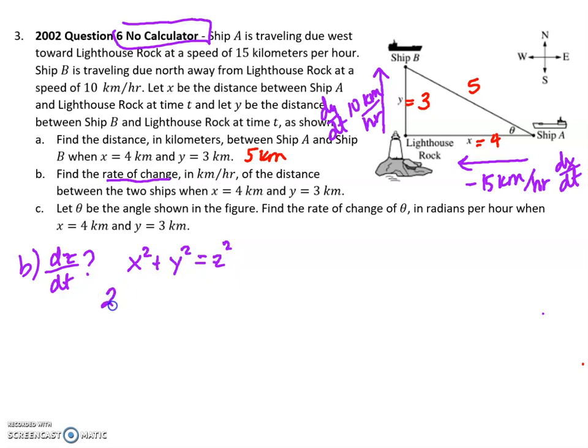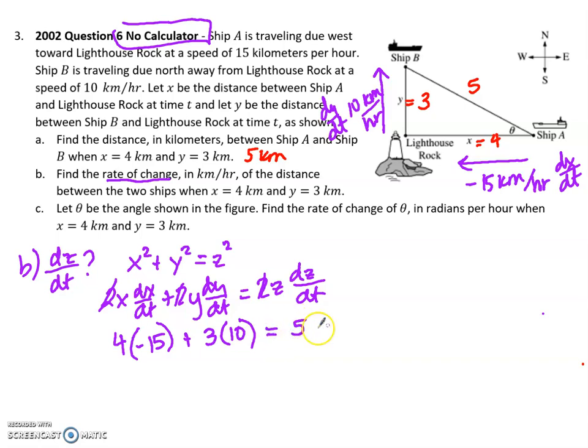I'm going to take the derivative to introduce my rate. So I have 2x dx/dt plus 2y dy/dt equals 2z dz/dt. I can divide everybody by 2, and then I'm going to start replacing with things that I know. X was 4. The rate of change of the x side was losing 15 km per hour. My y side was 3, and it was gaining 10 km per hour. My z value was 5, and I don't know dz/dt. So then I can just combine terms, divide both sides by 5. And I think for this one, I ended up with negative 6 km per hour for my rate of change of my hypotenuse. So it was getting smaller.